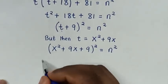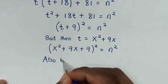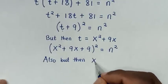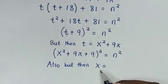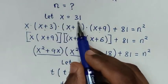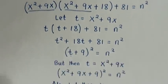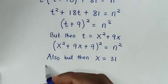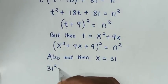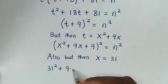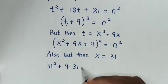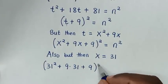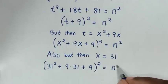In the next step, we also recall that x = 31. Substituting x = 31, we get (31² + 9 times 31 + 9) squared equals n squared.